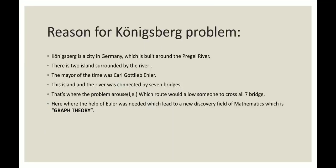Reasons for Königsberg Problem. First of all, Königsberg is a city in Germany which is around the Pregel River. There are two islands surrounded by the river. The mayor of the place was Karl. This was in the year 1735. This island and the river was connected by seven bridges.